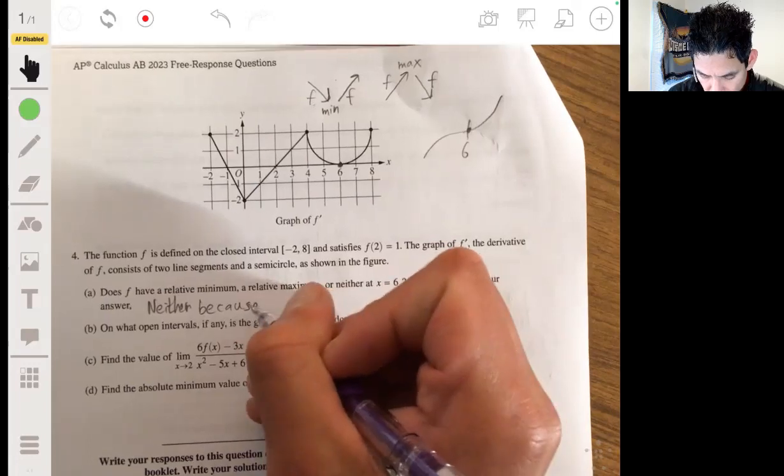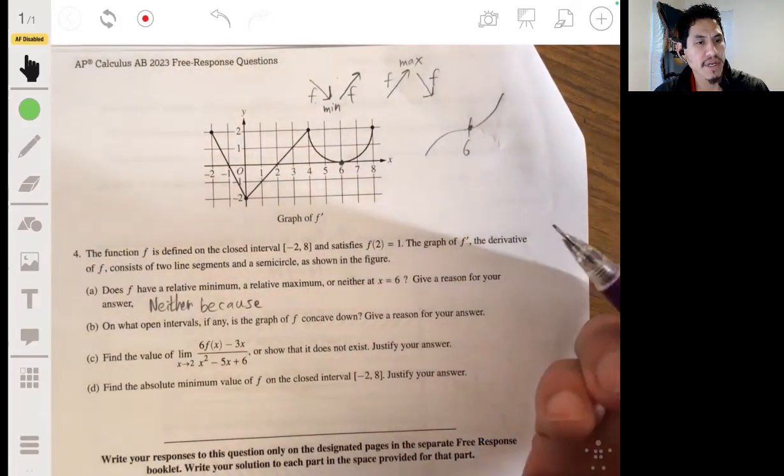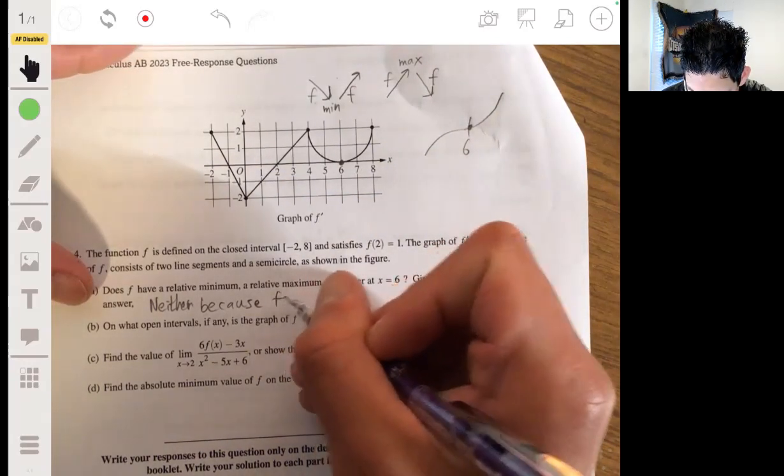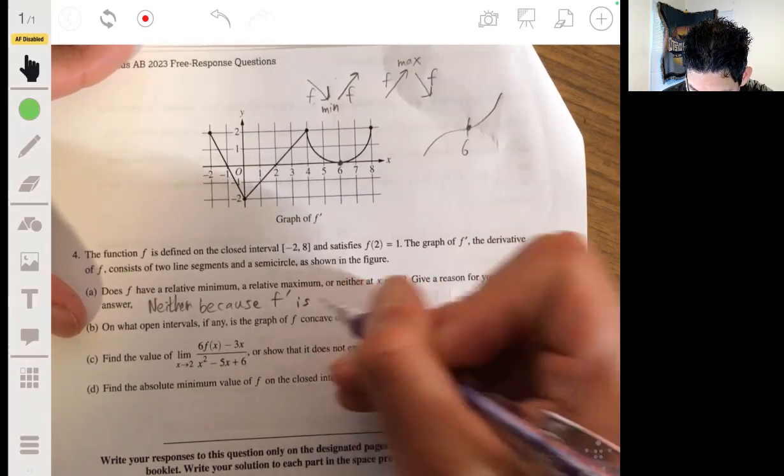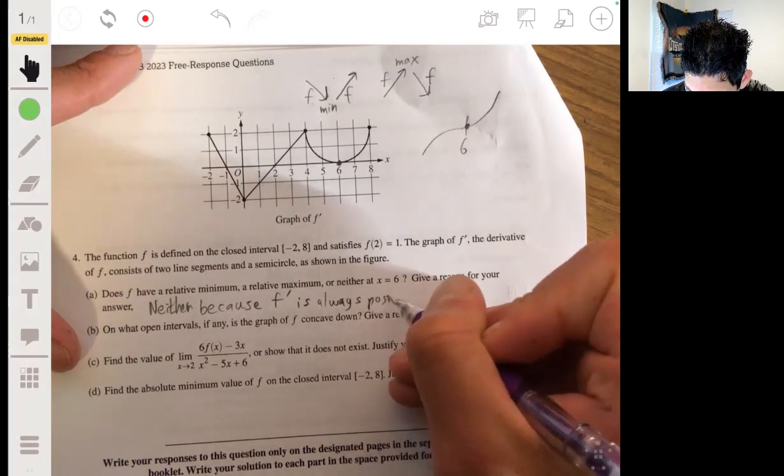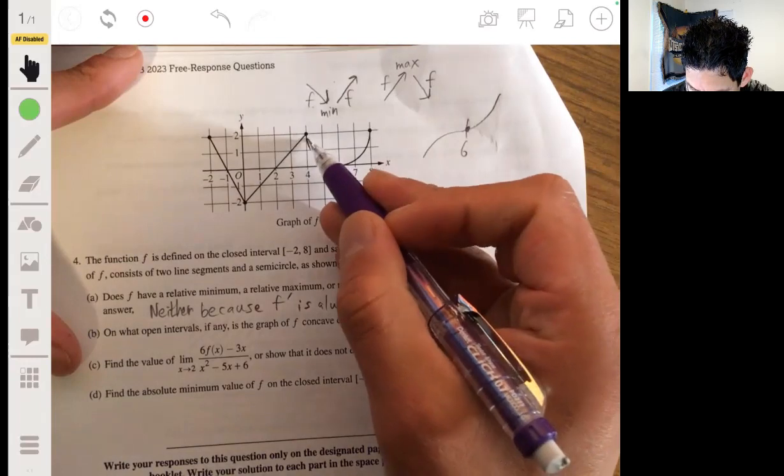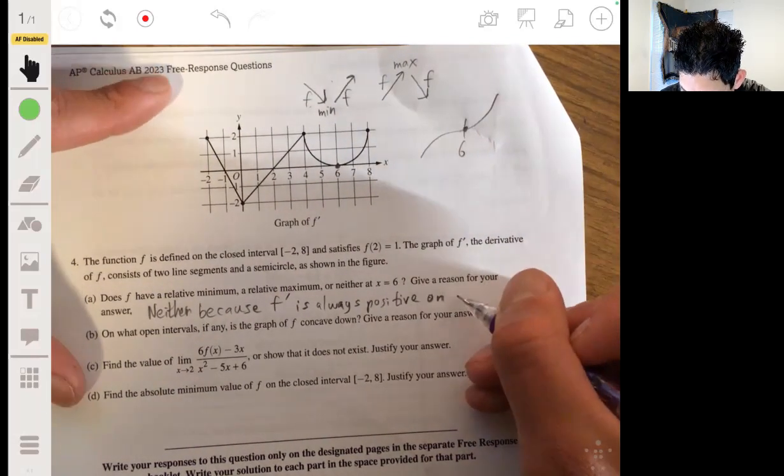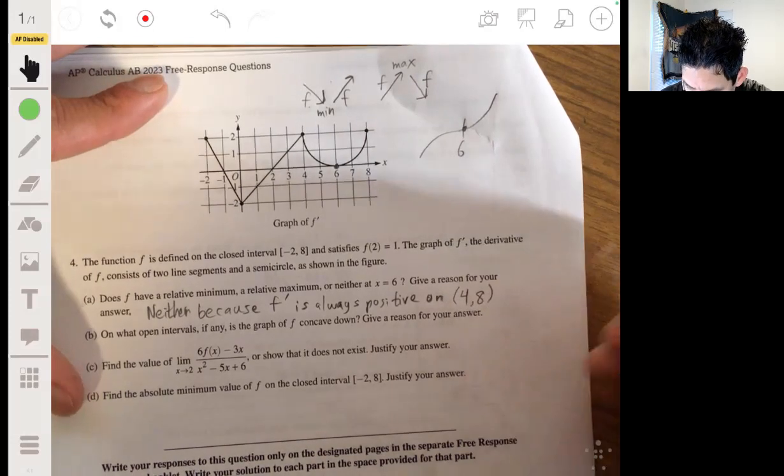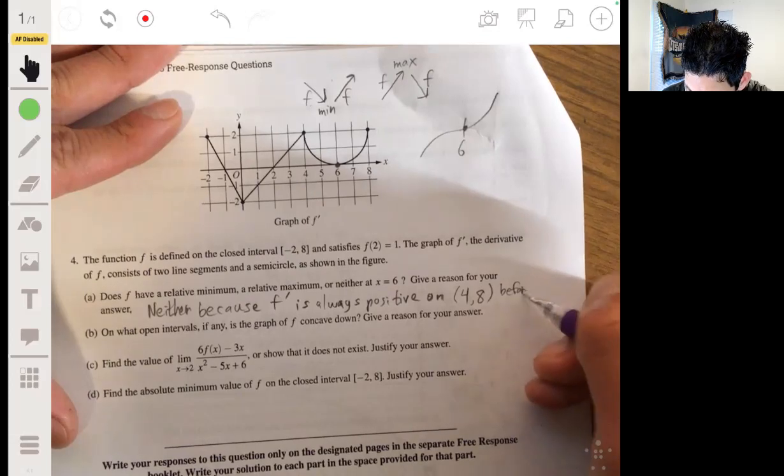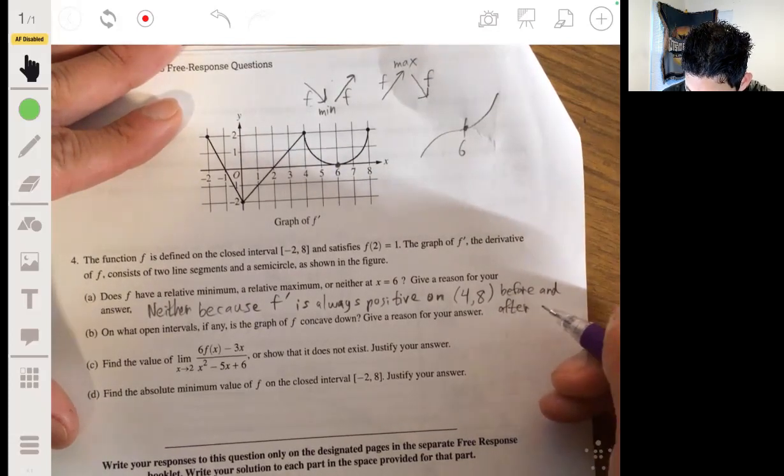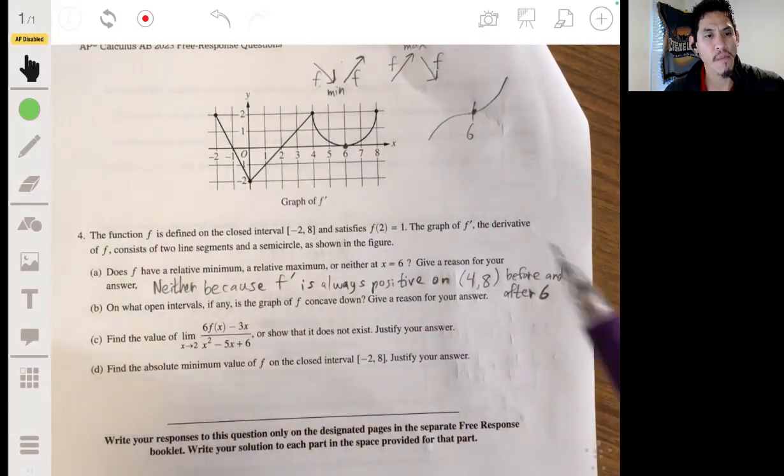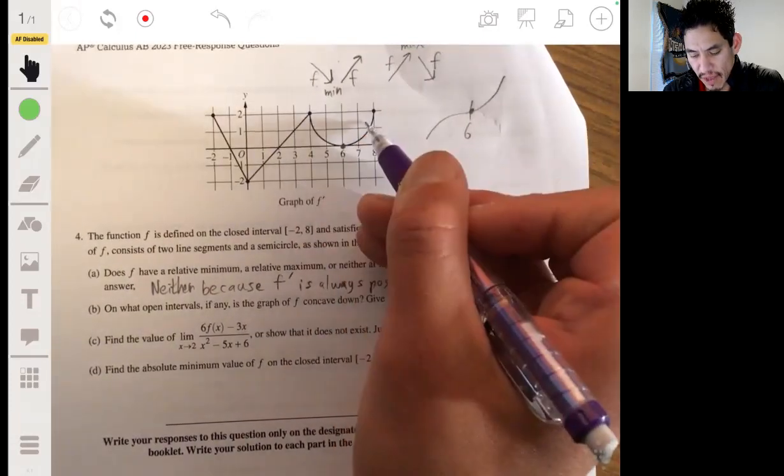So, there's neither relative max or min at six. And our reason, because I know they probably won't accept these drawings, we'll say because f prime is positive, it's always positive on an interval right around six. Let's say always positive from four to eight, before and after six. And I would accept this answer, but you never know with these people. They have very interesting requirements.